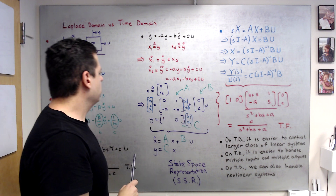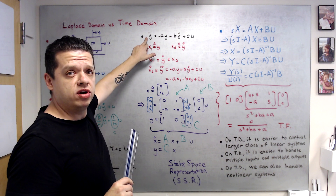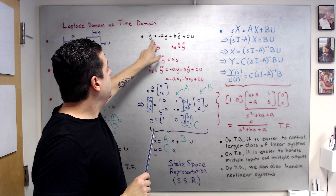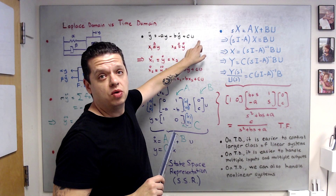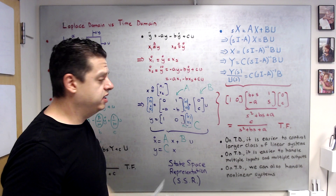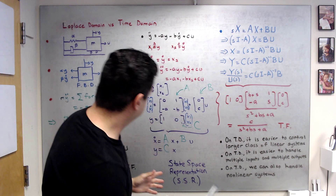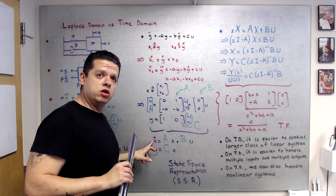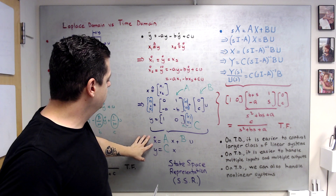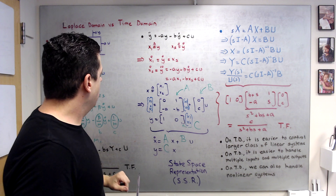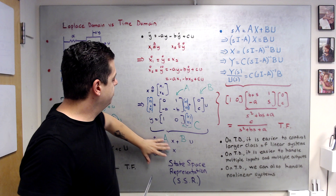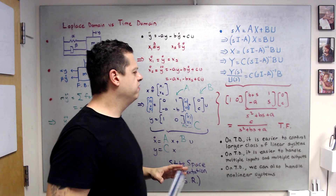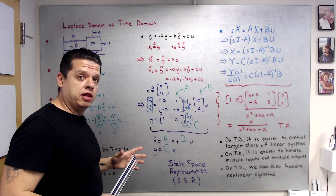Our output y is the first state variable x1, so y = [1, 0]·x. This gives us the standard state space form: x-dot = Ax + Bu, y = Cx. A couple of remarks: in this case the order is two, since the ODE is second order, so we need two states. If it were third order we'd also define x3 = Y-double-dot. This is our state space representation.